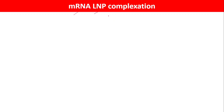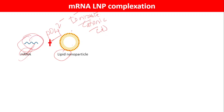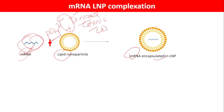How does mRNA-LNP complexation occur? mRNA is a negatively charged molecule because of the phosphate group. When mRNA interacts with the ionizable lipids, which are cationic or positively charged at low pH, mRNA is negatively charged and ionizable lipids are positively charged, therefore they interact. There is formation of a complex between mRNA and ionizable lipids, resulting in mRNA encapsulated in the lipid nanoparticle.